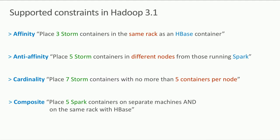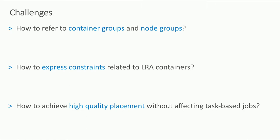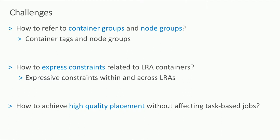The challenges we faced: first, we need to refer to groups of containers — like 'my HBase containers' — and groups of nodes like upgrade domains or racks. For that, we added container tags and node groups. Second, we need to let applications express complex constraints — I'll show the new constraints API. Third, we need high-quality placement in the scheduler without affecting task-based jobs, for which we introduced the placement constraint processor.